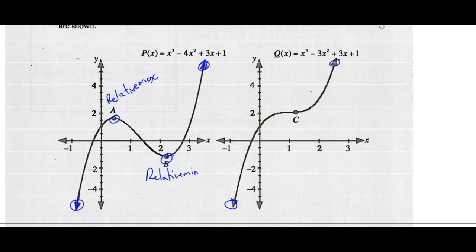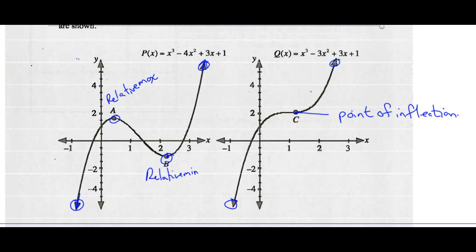Looking at the graph of q(x), it doesn't have any turning points, but the curve at C changes. We call point C a point of inflection. So graphs can change direction either by having relative maxes or mins, or they can have a point of inflection as the graph of q(x) has.